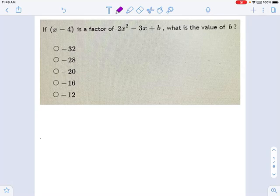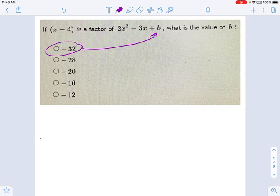It may look like we're heading for a whole bunch of guess and check, and that is a way you could solve this problem. You could plug negative 32 in for b, try to factor it, and see if that works, where x minus 4 would be one of your factors. That's not the fastest way to do this one.